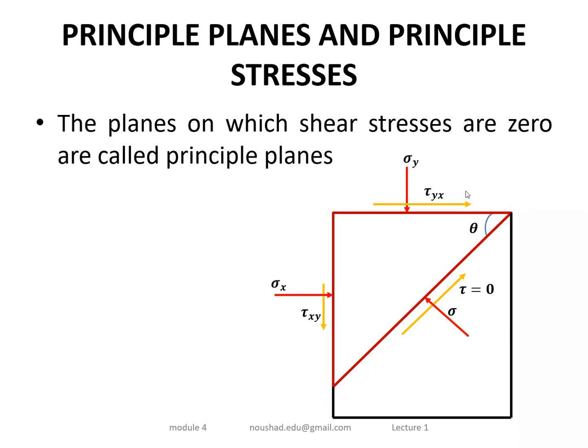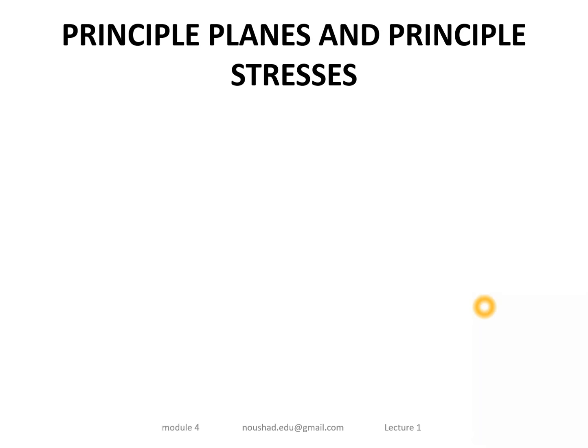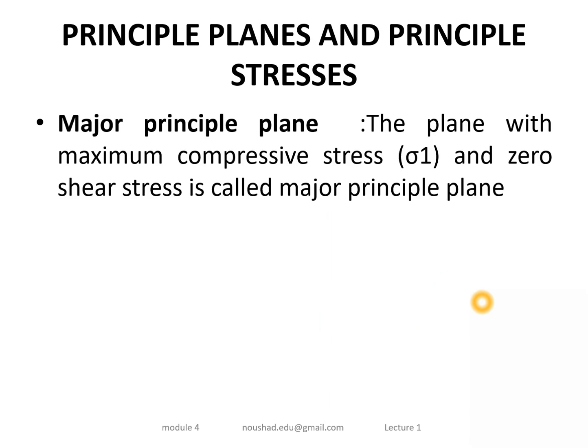If we have planes at different inclinations sigma_x and sigma_y with theta inclination, the normal stress sigma and shear tau can be computed. When tau equals zero, such a plane is the principal plane. The major principal plane is the plane where tau is zero and the normal stress is maximum (sigma_1).